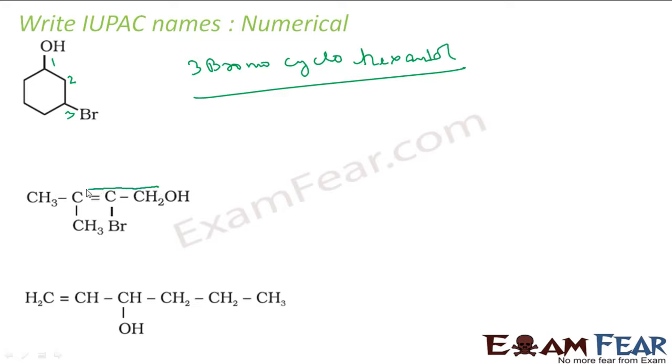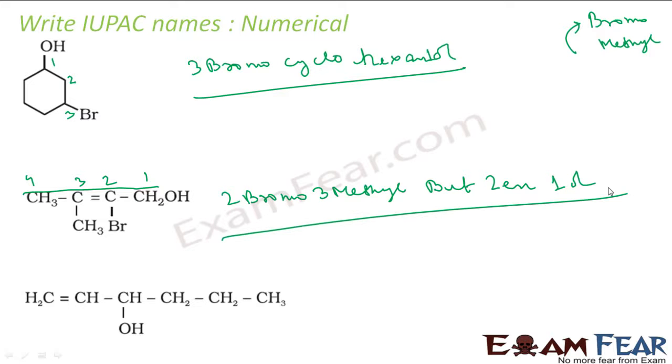For this compound, the longest chain is 1, 2, 3, 4. I have a bromo group and a methyl group. Alphabetically, bromo comes first, so it's 2-bromo. At position 3, there's a methyl group: 3-methyl. The chain is butane with a double bond at position 2 (but-2-ene), and OH at position 1 (1-ol). The complete name is 2-bromo-3-methylbut-2-en-1-ol.